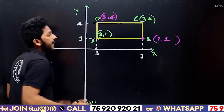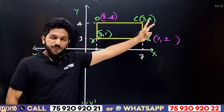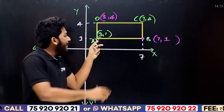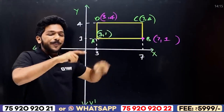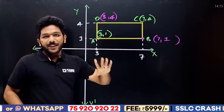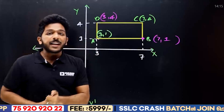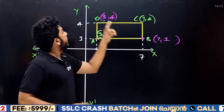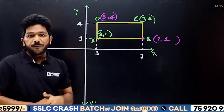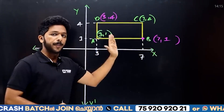So if A=(3,1) and C=(7,4), then we match the coordinates. B gets the x from C and y from A, so B=(7,1). D gets the x from A and y from C, so D=(3,4). This is the first method.